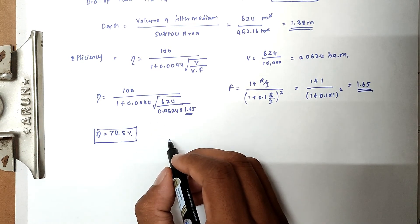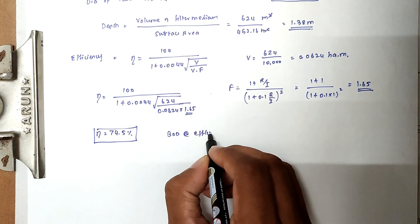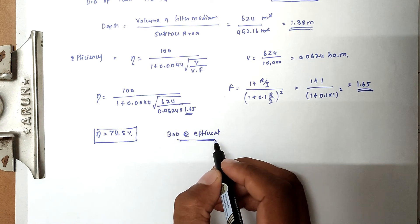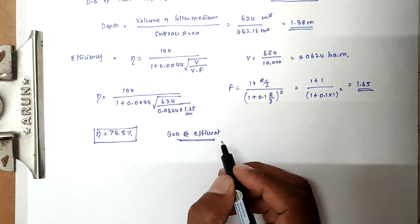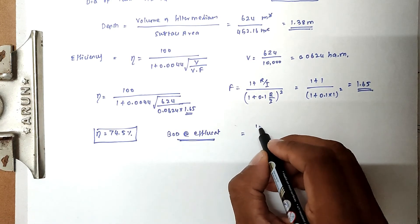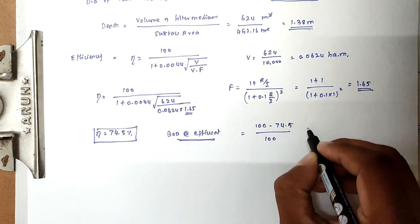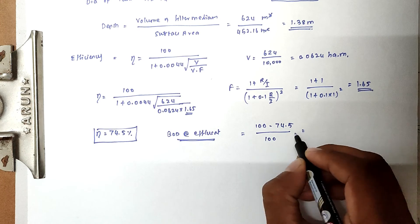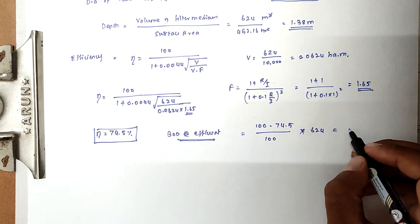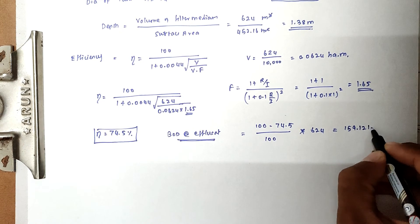Now for the BOD of the effluent: the BOD remaining equals (100 − 74.5) / 100 × 624, which is 25.5% of 624 kg/day, giving approximately 159.12 kg per day.